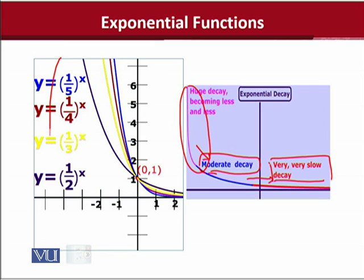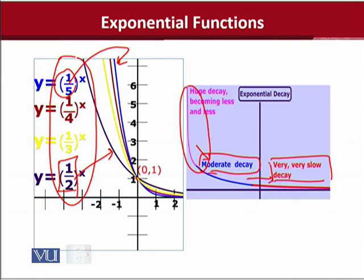Four exponential decay graphs explain the difference as we change the value of 'a'. When 'a' is the highest, the curve has the slowest decay, and when the value of 'a' is the smallest, it has the quickest decay. This is how exponential functions change when the value of 'a' changes.